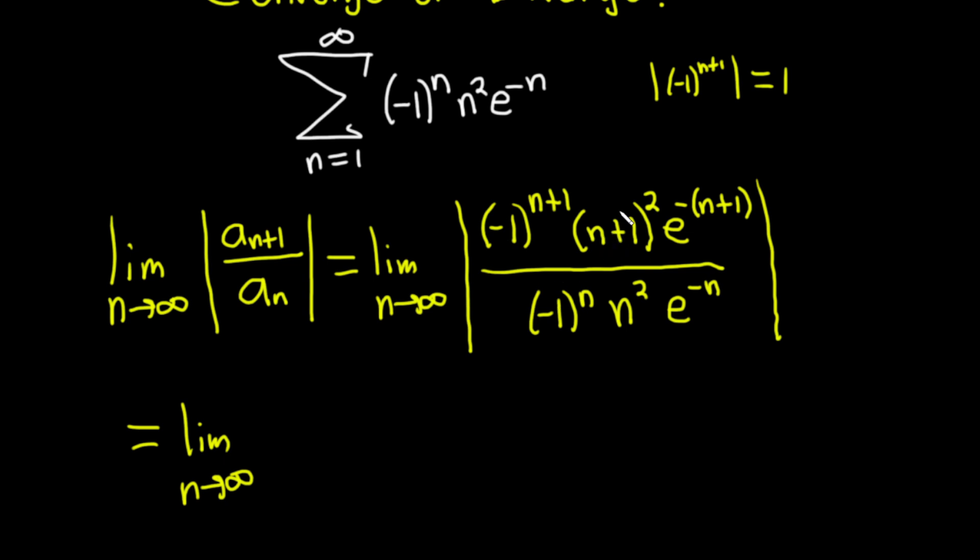We have (n+1)^2 over n^2. What we can do here is bring this upstairs, so this is going to be e^(-n-1), and bringing this upstairs makes it e^n, so you can add these.